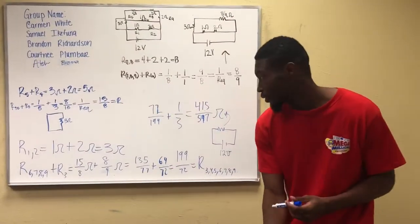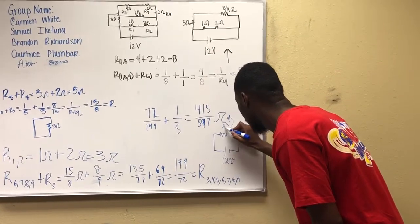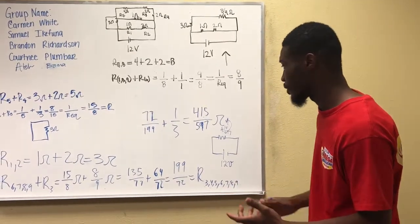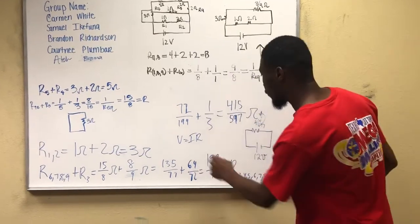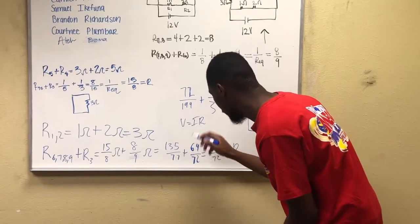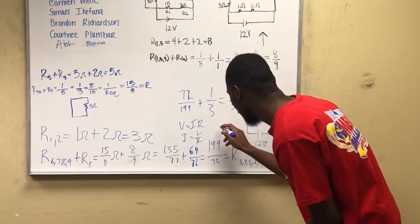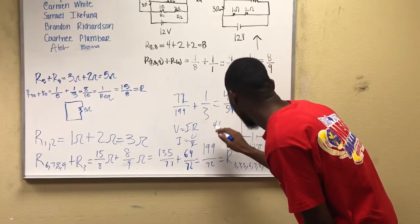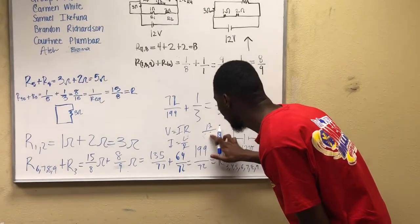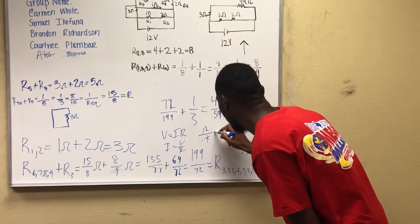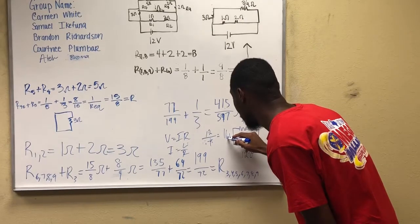Okay. So in my segment of this, basically we found the total resistance which was 415 over 597. And basically realizing that the formula for voltage is V equals IR. So, in order to find current, which is our goal, we have to evaluate this or simplify this to find current. So it will be I equals V over R. And then we simply plug it in. We simply plug in the values to find what we need to. Okay. So given that, it becomes 12 over 415 over 597, which equates to 16.2 amps.